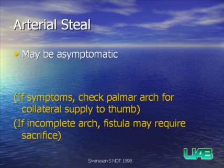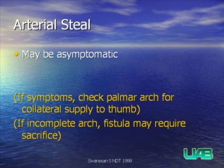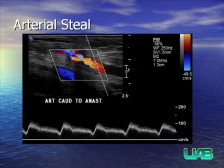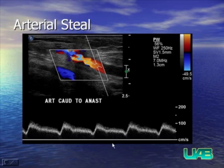Sometimes with a very successful fistula, there may be sumping of flow from the distal artery, taking blood flow away from the hand or forearm. Usually these are asymptomatic. However, if there are symptoms, a modified sonographic Allen's test should be performed, checking flow from the ulnar and radial arteries to ensure a patent palmar arch with collateral supply to the thumb. If the arch is insufficient and symptoms are present, occasional revision or even sacrifice of the fistula may be necessary. This example shows reversal of arterial flow beyond the anastomosis, with flow heading toward the patient's head in a reversed fashion.